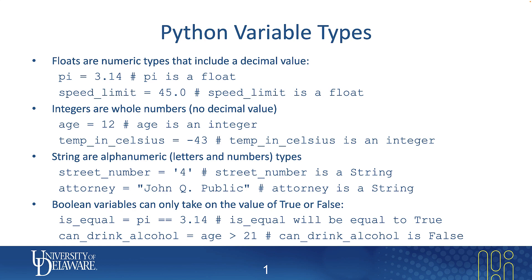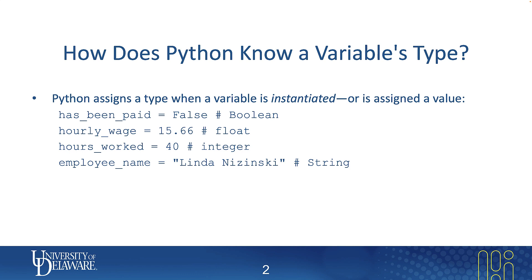So those are the four types we'll be using this semester: floats, integers, strings, and booleans. How does Python know a variable's type? Python uses a specific approach called duck typing — basically, whatever you assign it, that's its type. So has_been_paid = False becomes a boolean, hourly_wage = 15.66 becomes a float, hours_worked = 40 becomes an integer, and if employee_name has quotes around it, it becomes a string. With Python, unlike some languages, you do not have to explicitly declare a variable's type.